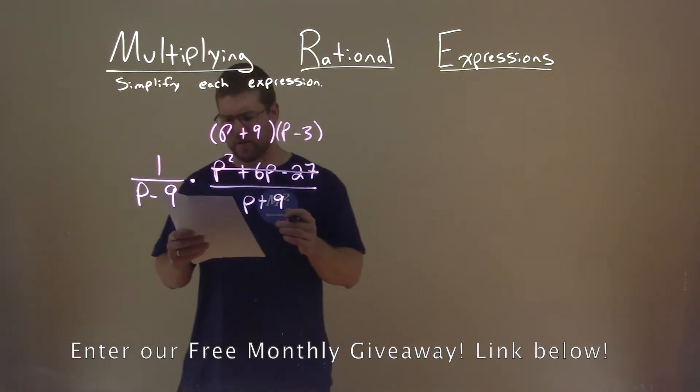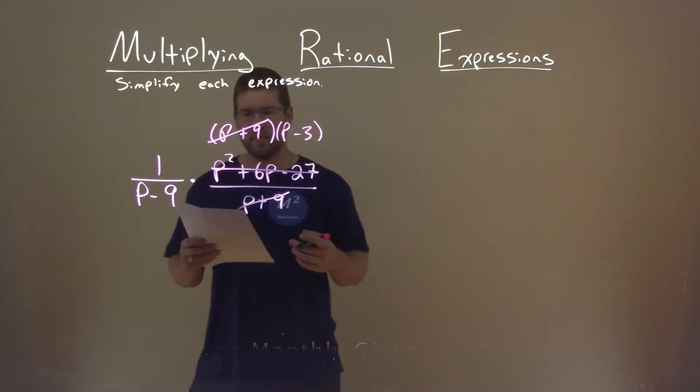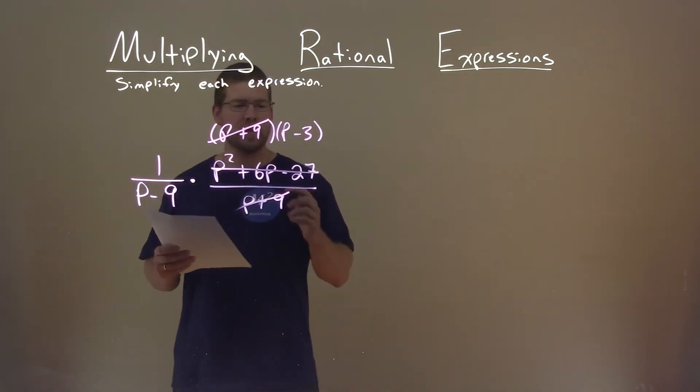Now we can try to cancel out what we can. I see a p plus 9 here and a p plus 9 right there. Nothing else really easily cancels.